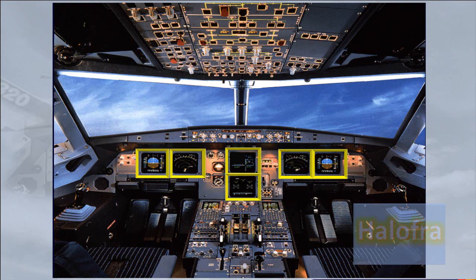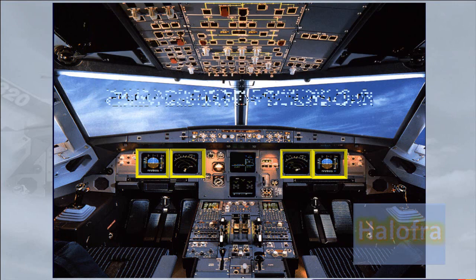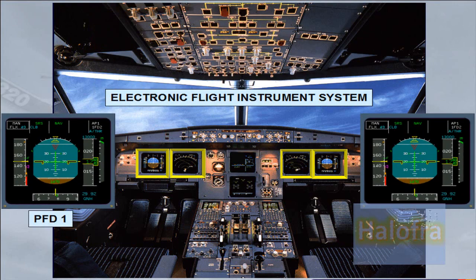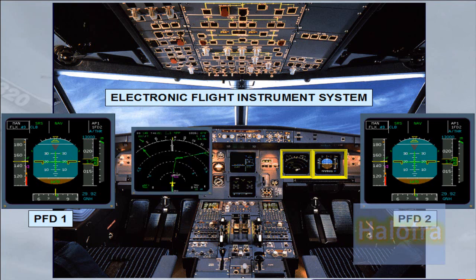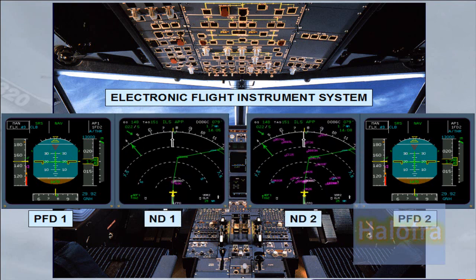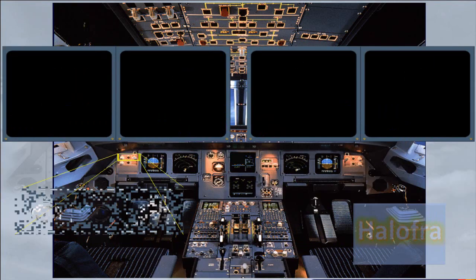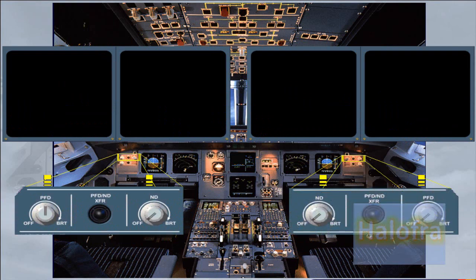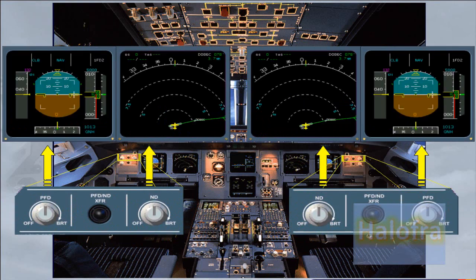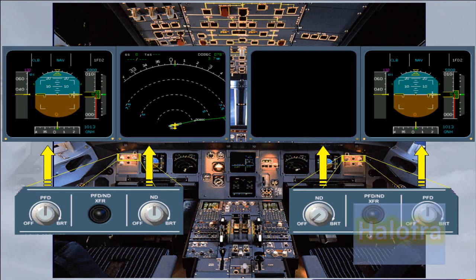Let's look at the EFIS system first. Flight parameters are displayed on primary flight displays, PFD, while navigation data is displayed on navigation displays, ND. Outboard of the PFD, there are control knobs to adjust the brightness of the associated PFD and ND, or to turn the display off.